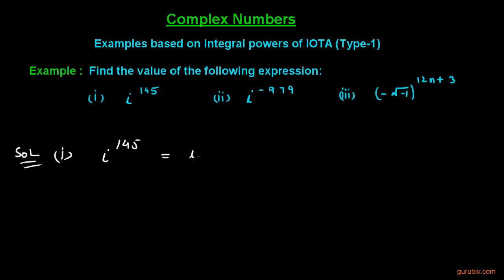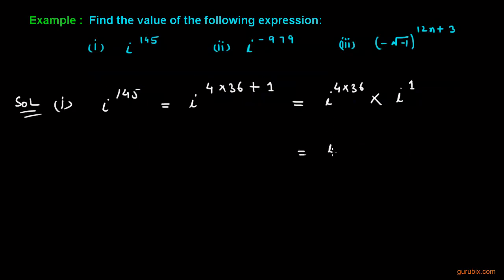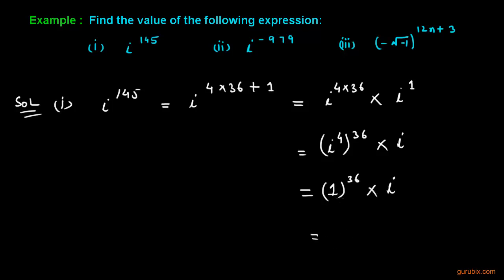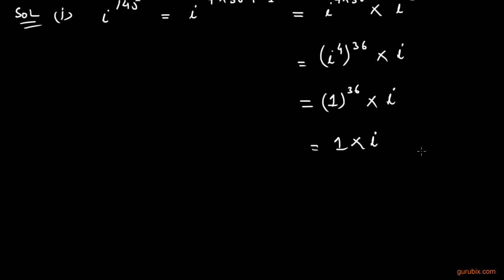We can write 145 as 4 into 36 plus 1, or we can write it as iota raised to (4 into 36) into iota raised to 1. We can write it as iota raised to 4, all raised to 36, into iota. We know that iota raised to 4 is equal to 1, so this value will be equal to 1 raised to 36 into iota. If we multiply 1 any number of times we get 1, so multiplying iota by 1 we get iota.